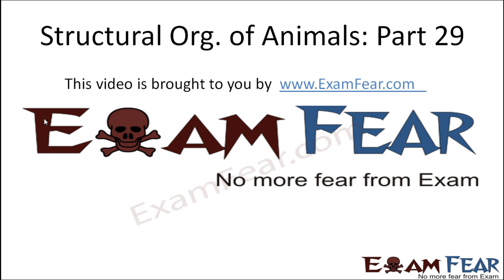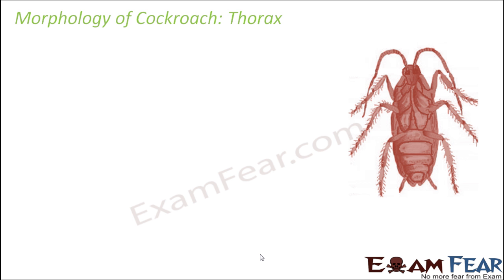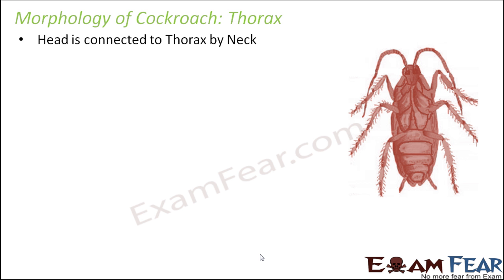This video on structural organization of animals part 29 is brought to you by examfear.com. We will now talk about the thorax. There are three main regions: head, thorax, and abdomen. Head is done, so now we discuss thorax. Head is connected to thorax by neck, which is very flexible. The thorax is quite stiff and forms the framework of the body.